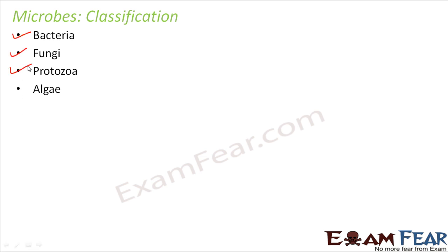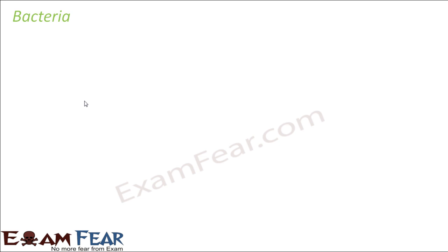These are the four main groups into which microorganisms can be classified. Now we will talk about each of them in a little more detail — how they look like. Let us talk about bacteria first. Bacteria are the oldest life forms.